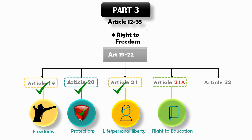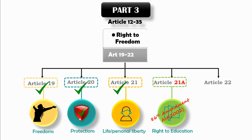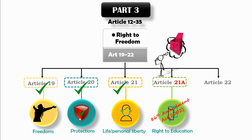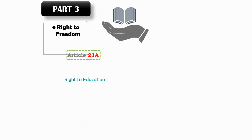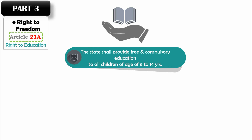It is written 21A, which means that this article has been added later in the Constitution. It was added by the 86th Amendment Act of 2002. Whenever you see any article with an alphabet, understand that article has been added later. Article 21A says the state shall provide free and compulsory education to all children of age 6 to 14 years in such manner as the state may by law determine.